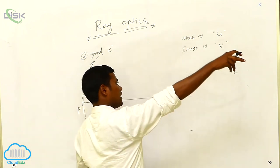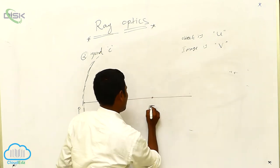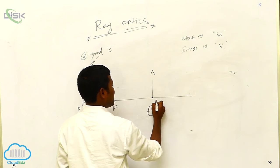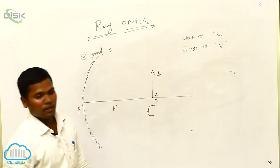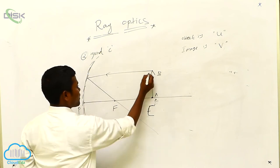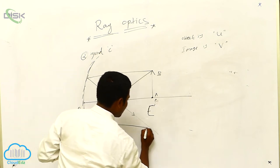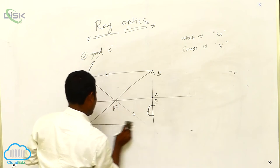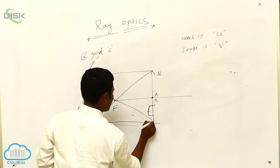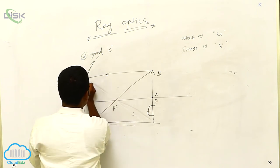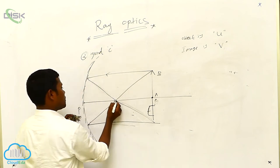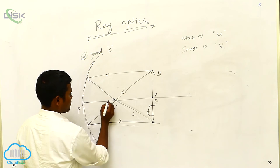Previously I was at infinite distance. Next, behind C. Now our object is at C. I have considered the object name AB. Now I have taken R1 ray — after striking, it passed through the focus. Next, I am considering R3 ray — after that it is going like this. Then where these two are meeting? At this point.